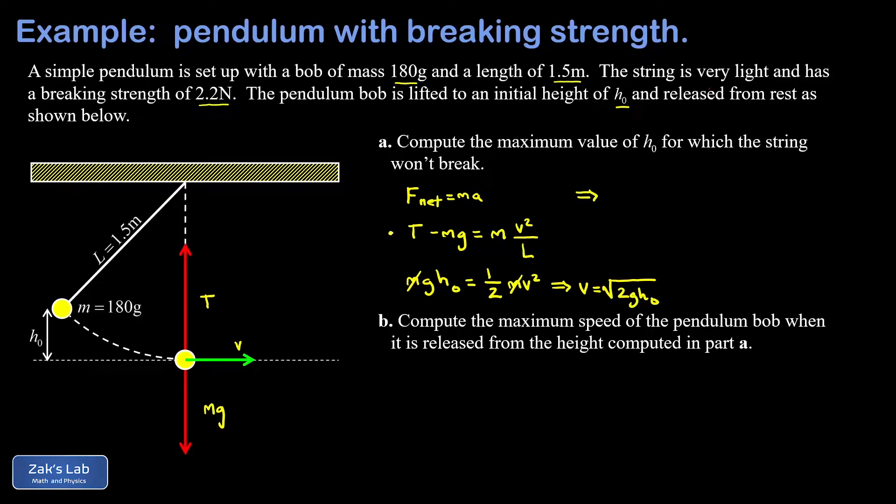Now getting back to our force equation, that v squared can be replaced with 2g h naught. Now we can solve in general for the height in terms of the tension at the bottom of the string. And to get this done, we're going to multiply both sides by l, and then divide both sides by 2mg, isolating h naught on one side of the equation.